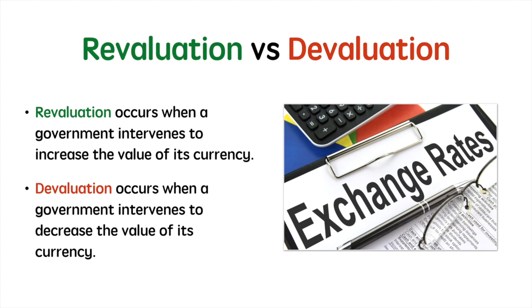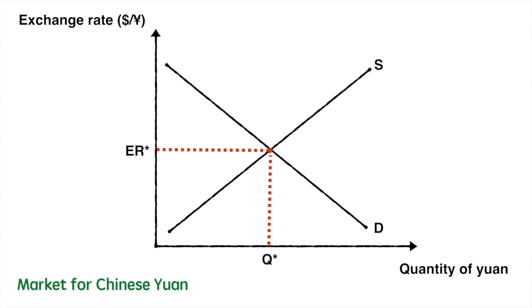Next, we'll see how a government actively intervenes to keep the exchange rate fixed. Although China no longer operates a fixed exchange rate regime, having moved over to a managed float system, we can use the country's currency history to understand the two different exchange rate systems. We will look at the period in which China fixed the value of the yuan to the dollar at about 8.28 to the dollar — a value that held from 1994 to 2005.